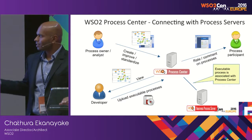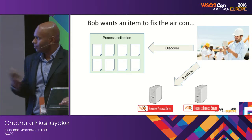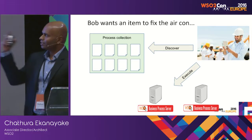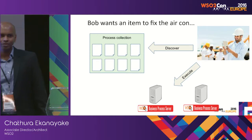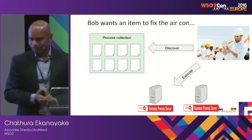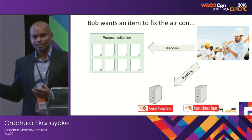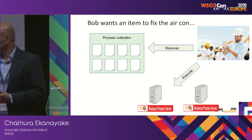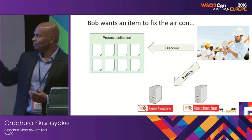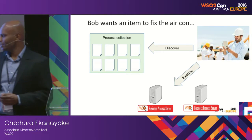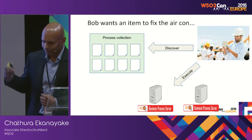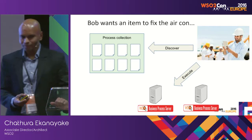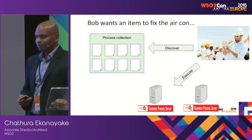That is the automation step. Coming back to our example — Bob wants to order an item. He connects to the Process Centre and finds the process for procuring an item. He can check whether there is an associated executable process. If there is, he can just execute the process from within the Process Centre. It will be executed in process servers so that the necessary people can participate in and complete the automated process. This is how automation is supported using Process Centre.